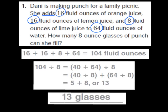I also see that it asks how many 8-ounce glasses of punch can she fill. So I now have to take my 104 fluid ounces and divide it by the 8 ounces that can fit in each glass. My problem becomes 104 divided by 8. I cannot very easily divide 104 by 8, but I can break it apart into numbers that are easier to work with — 40 plus 64.